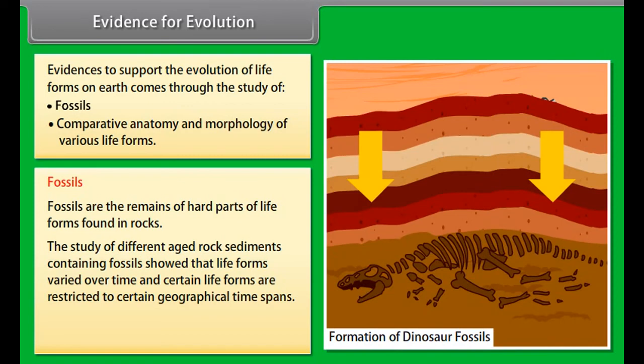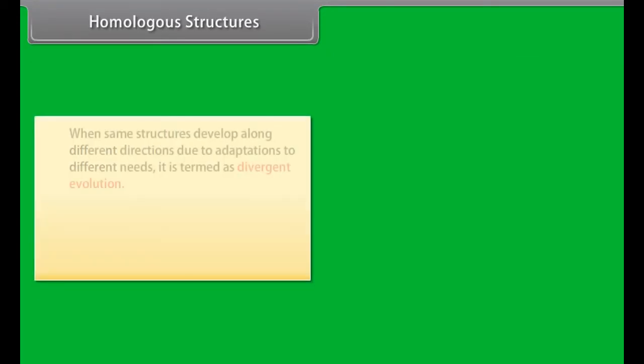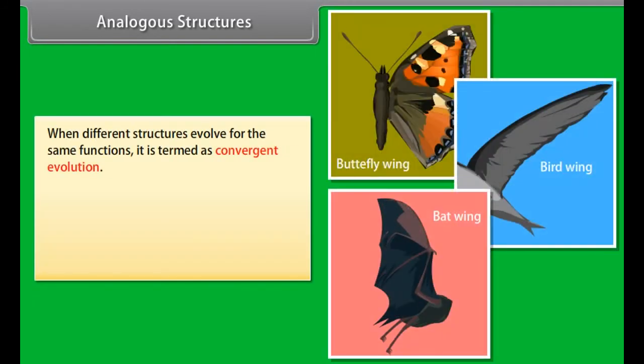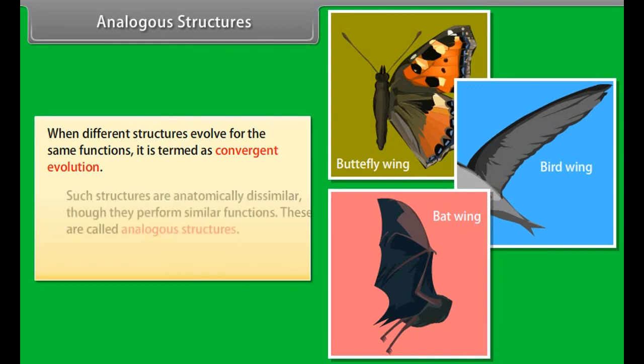Evidences to support the evolution of life forms on Earth comes through the study of fossils, comparative anatomy and morphology of various life forms. Fossils are the remains of hard parts of life forms found in rocks. The study of different aged rock sediments containing fossils showed that life forms varied over time and certain life forms are restricted to certain geographical time spans. Such evidence is referred to as paleontological evidence.